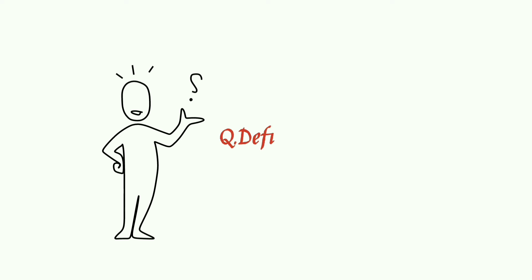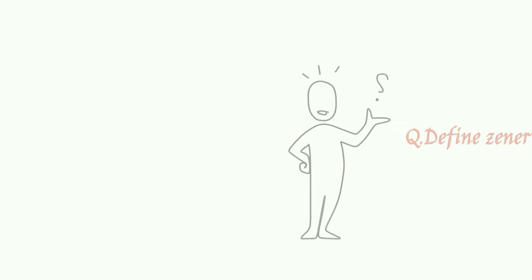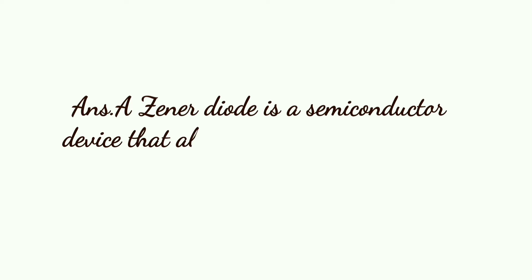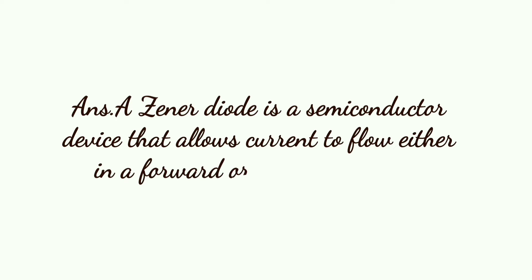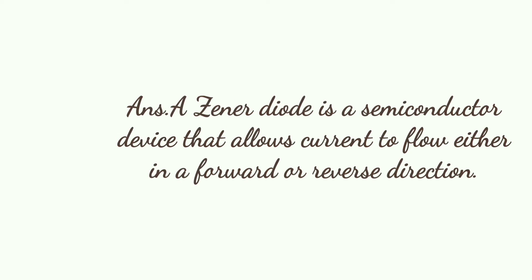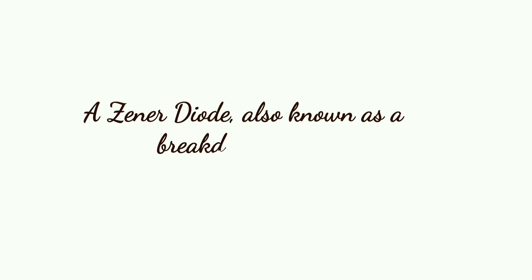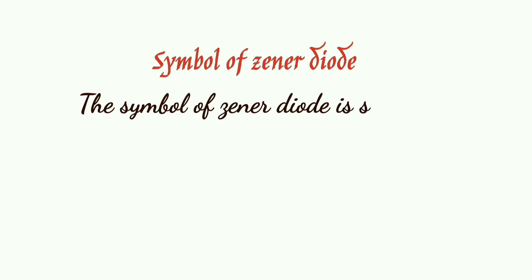A zener diode is a semiconductor device that allows current to flow either in a forward or reverse direction. A zener diode is also known as a breakdown diode. The symbol of the zener diode is shown in the figure below. The diagram below also shows the VI characteristics of the zener diode.